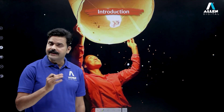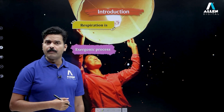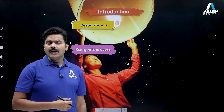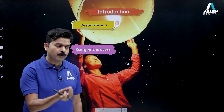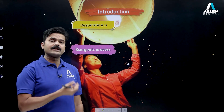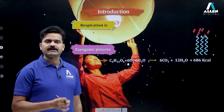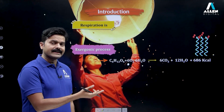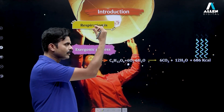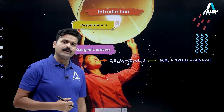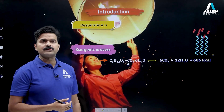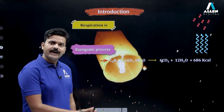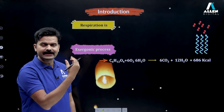Cellular respiration has several properties. One such property is that it is an exergonic process. A process is called exergonic when energy is released in it. If we look at the reaction of cellular respiration: C6H12O6 + 6O2 + 6H2O releases 6CO2 + 12H2O + 686 kilocalories. So much energy is released here, and when energy is released in a process, it is called exergonic — so cellular respiration is an exergonic process.